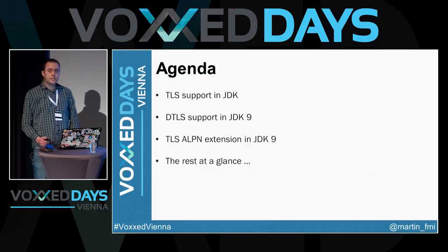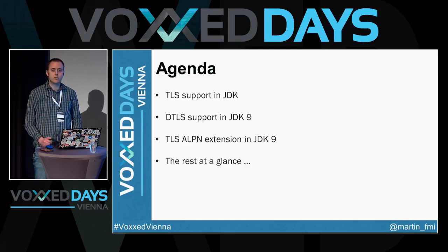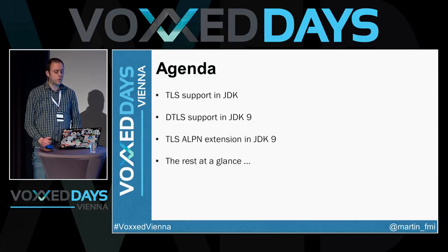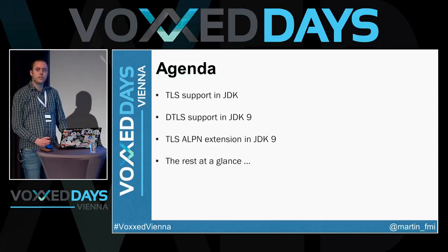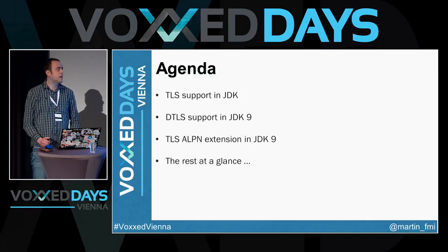In this session we'll first do a short recap on what TLS or Transport Layer Security support looks like up to JDK 9. Based on that knowledge we'll cover the new security enhancements in Java 9 such as DTLS (Datagram Transport Layer Security), ALPN (a very interesting extension on the TLS handshake protocol), and we'll also review the rest of the security enhancements at a glance. As you know, Java 9 has a major introduction which is the Jigsaw module system.